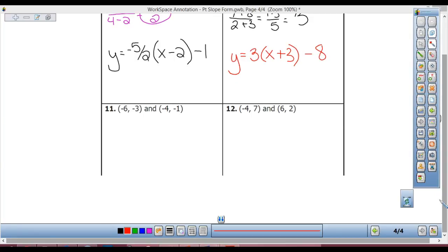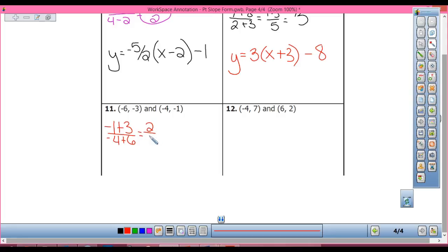Slope for 11, Connor. Negative 1 plus 3, negative 4 plus 6. On top I've got 2 over 2, which is 1. So point-slope form, Margie. Y equals 1, X minus 6. Good. Do I need this 1 right here? No. So sometimes you'll see it without that 1 right there. If you write that 1, not a big deal. It's still correct if you write that 1, I just want you to know that sometimes you'll see it without the 1. Does that make sense?